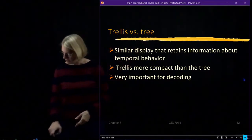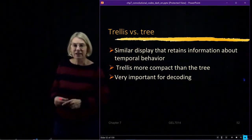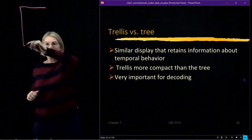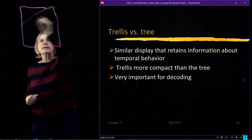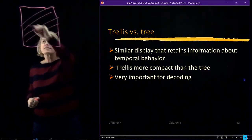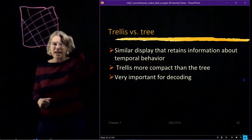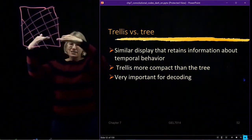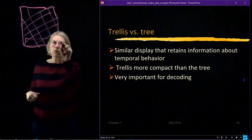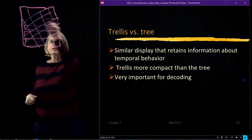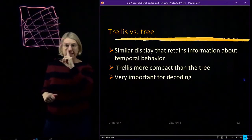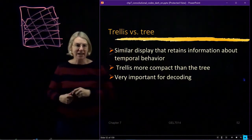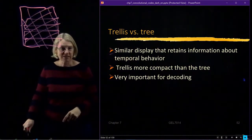Trellis versus a tree. A trellis — you may know the word — is like one I have in my garden: a nice trellis with a lattice on it, where I grow flowers. This trellis, if I look at any point in it, is very structured and really repeats itself. That is what we're going to do. We're going to build a trellis as a way of representing essentially the same information that was in the tree structure, but the trellis is more compact.